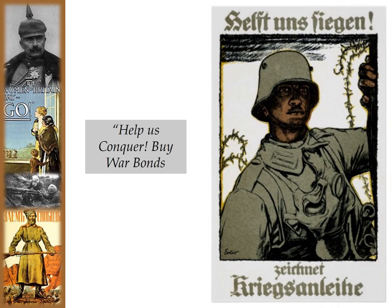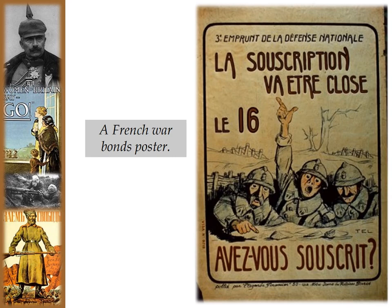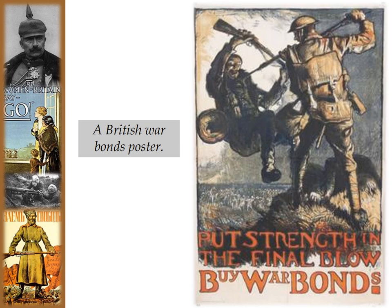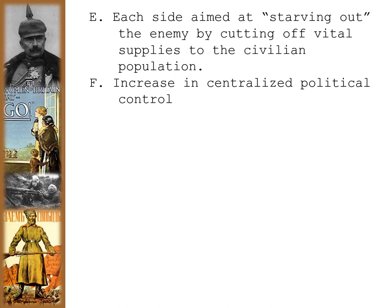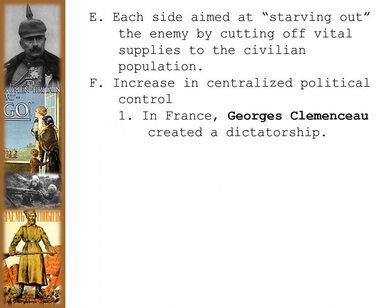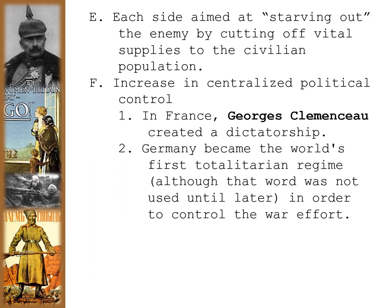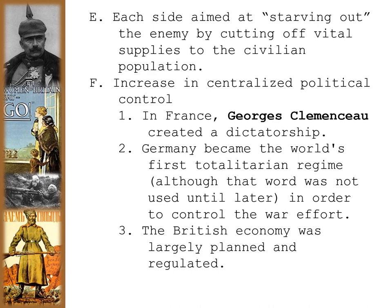War bonds posters appeared across all nations — from Russia's War Loan for the Sake of Victory, to Germany's Help Us Conquer, to Britain's Put Strength in the Final Blow. Each side aimed at starving out the enemy by cutting off vital supplies to civilian populations. Increased centralized political control resulted as well: in France, Georges Clemenceau created a dictatorship during the emergency of the war; Germany became what would eventually be called a totalitarian regime to control the war effort; and the British economy was largely planned and regulated by the government.